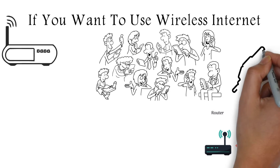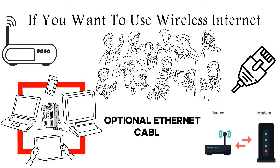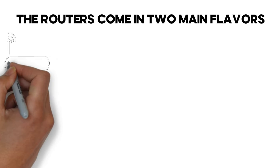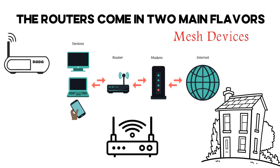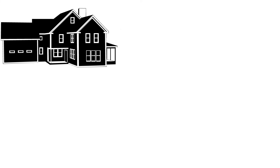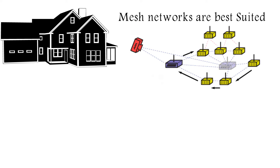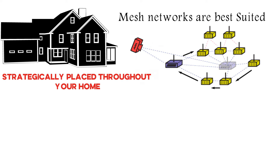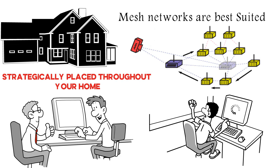Routers connect to your modem via an ethernet cable and pass the connection to other devices in your home via optional ethernet cables or wireless Wi-Fi. Routers come in two main flavors: standard one-piece and whole-home Wi-Fi networks based on mesh devices. For small homes, one-piece routers are usually sufficient, and you can always pick up a signal extender. For large houses, mesh networks are best suited — these replace a single router with multiple points called nodes, strategically placed throughout your home to provide coverage without losing speed or dead spots.